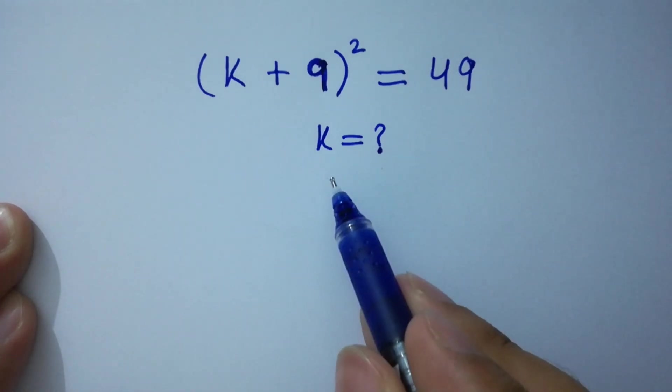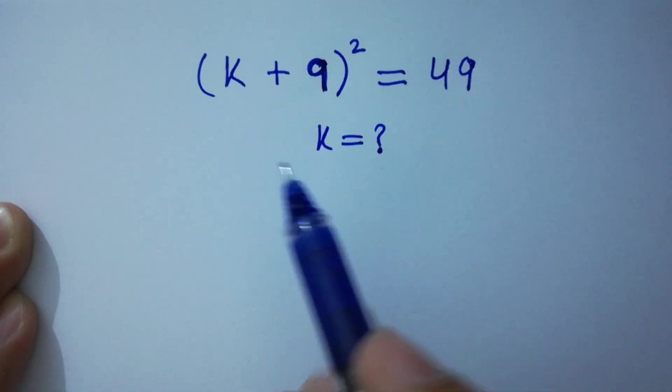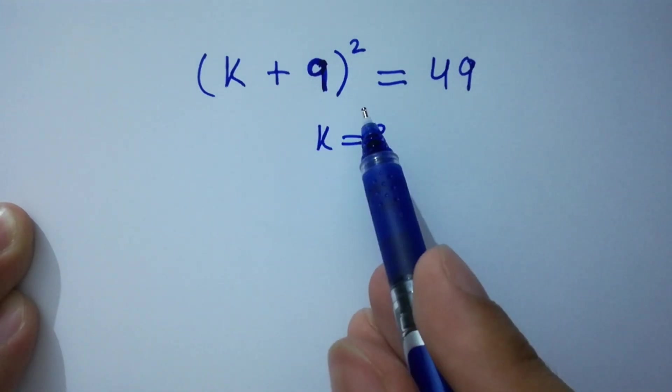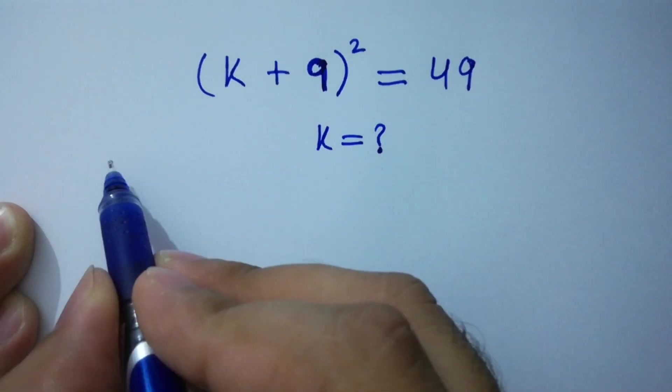Hello friends, find the value of k if (k + 9)² = 49. Let's have a solution.